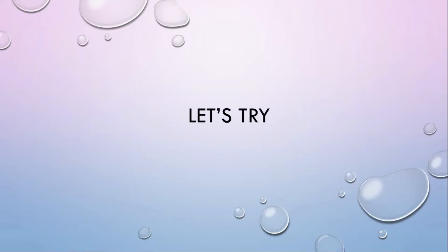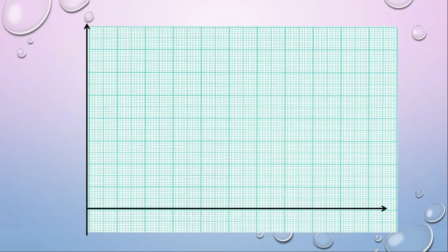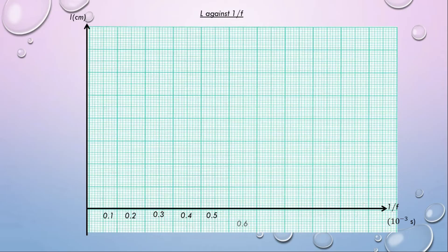How to plot a graph. Draw and label both axes and give their units; the units must be inserted in brackets. Choose an appropriate scale so that the data fills at least 80% of the graph paper. The scale should be multiples of 10, 5, 2, or 1 — do not use odd numbers.